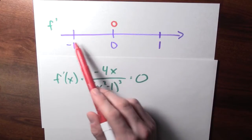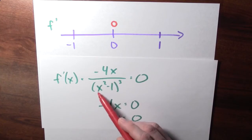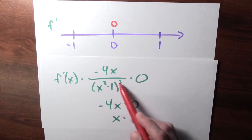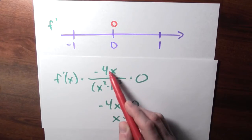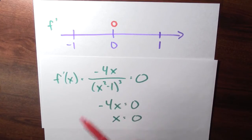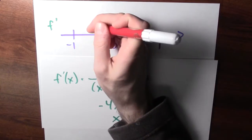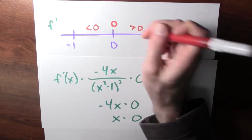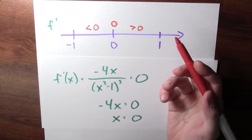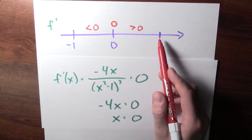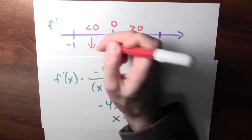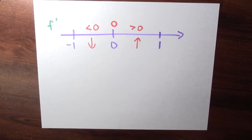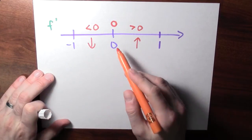What's the derivative at a number between minus 1 and 0? If I plug in such a number, x squared is between 0 and 1, so x squared minus 1 is negative — a negative number cubed gives a negative denominator. The numerator minus 4x is positive for negative x, so we have negative times negative divided by negative: that's negative. Similarly, the derivative is positive between 0 and 1. So the function is decreasing then increasing, meaning x equals 0 must be a local minimum.